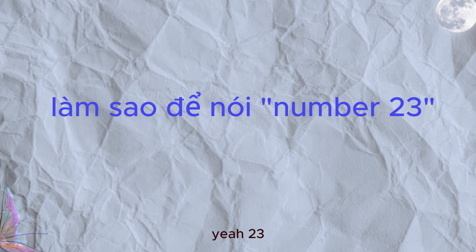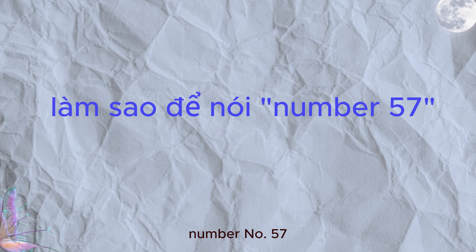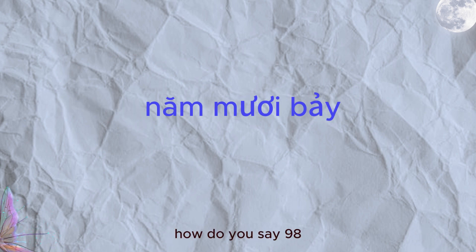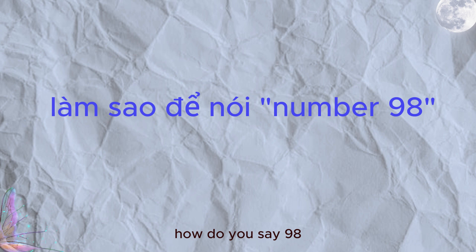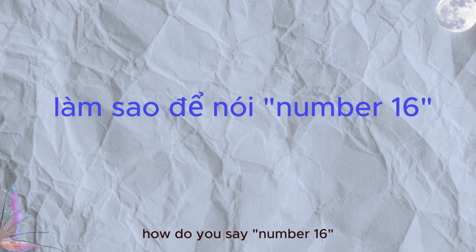So before a question I will say how do you say for you to get used to a sentence in Vietnamese like that. So how do you say number 23? Yeah, hai mươi ba. Làm sao để nói number 57? That's right, năm mươi bảy. Làm sao để nói 98? Chín mươi tám. Làm sao để nói 16? Mười sáu.